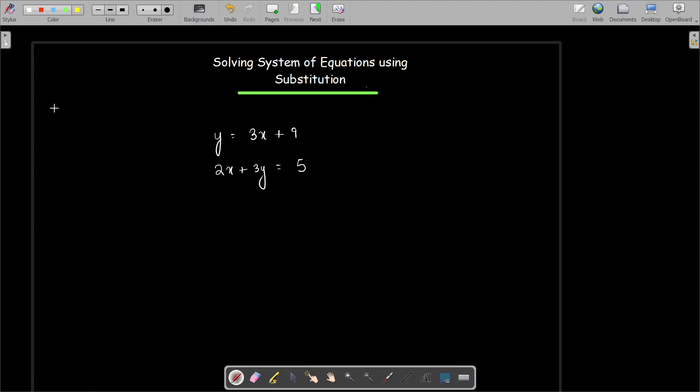You have two equations, and there will be a solution to this system of equations. There can be infinitely many solutions, there can be no solutions, or there can be one solution. These are the only three possibilities.